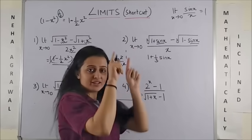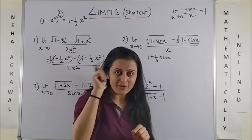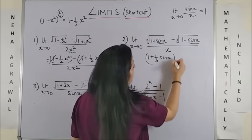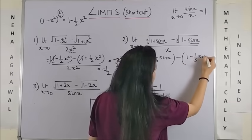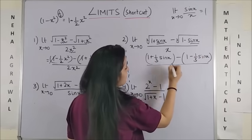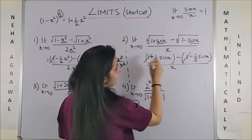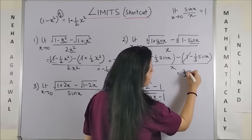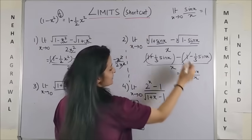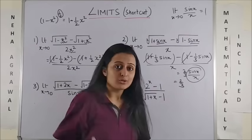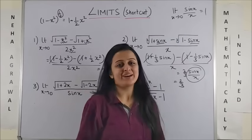Please note, this is cube root which is whole raised to power 1 by 3, so it comes down minus 1 minus 1 by 3 sin x and I'm left with x. These get cancelled. We are left with 2 by 3 sin x by x. We all know limit x tending to 0, this will give us 1. So the answer is simply 2 by 3.